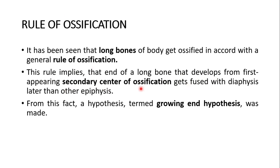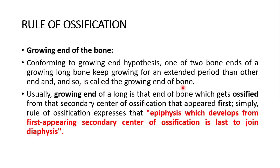From this fact a hypothesis termed the growing end hypothesis was made. Conforming to the growing end hypothesis, one of the two bone ends of a growing long bone keeps growing for an extended period than the other end, and so is called the growing end of the bone. Usually the growing end of a long bone is that end which gets ossified from the secondary center of ossification that appeared first.